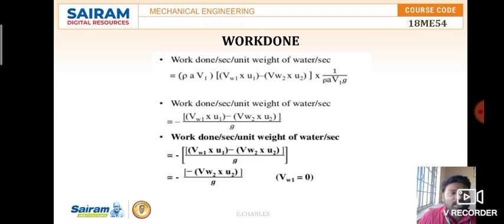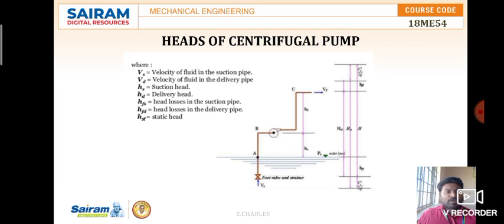This is the work done for centrifugal pumps. Moving on to the heads of centrifugal pumps: vs is the velocity of fluid in the suction pipe, vd is the velocity in the delivery pipe, hs is the suction head, hd is the delivery head, hfs is the head loss in the suction pipe, hfd is the head loss in the delivery pipe, and hst is the static head.